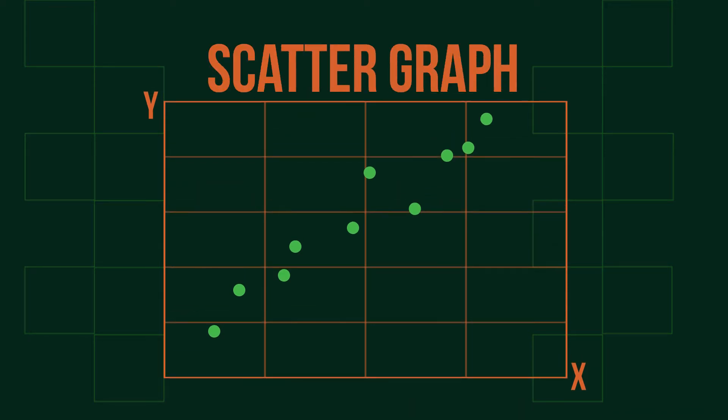The relationship between one event and another can be demonstrated by plotting points on a graph. Eventually, a scatter graph is formed.